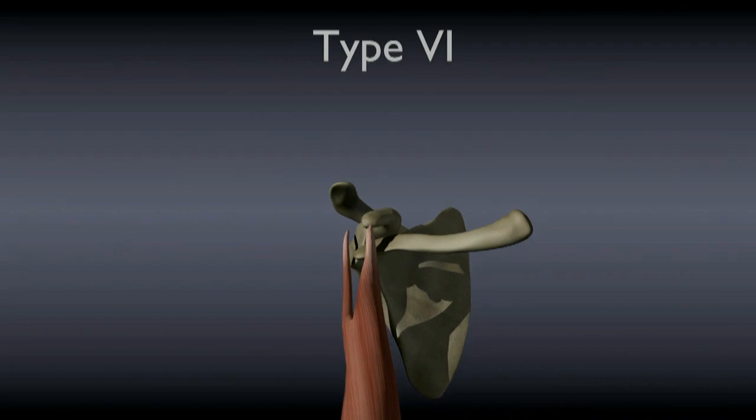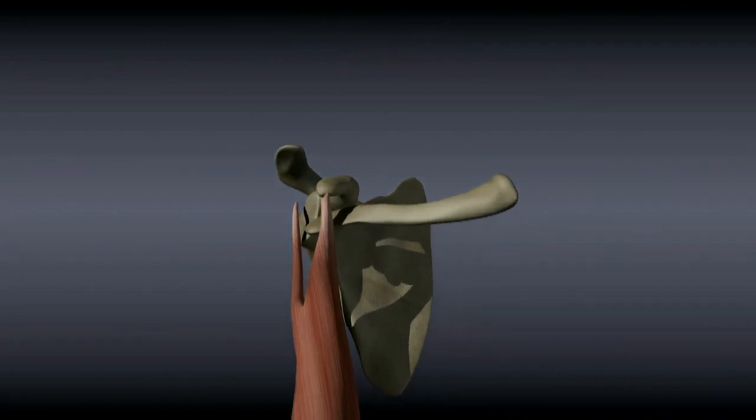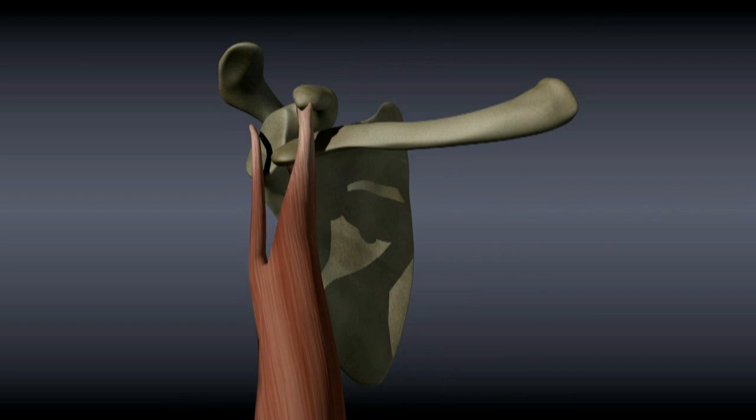Type 6 injuries are rare. They occur when such a violent force is applied to the shoulder that the clavicle is displaced below the coracoid and biceps tendon.